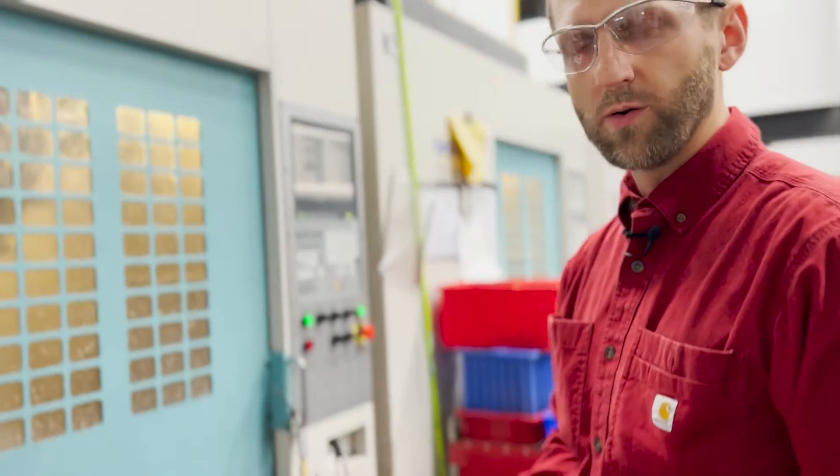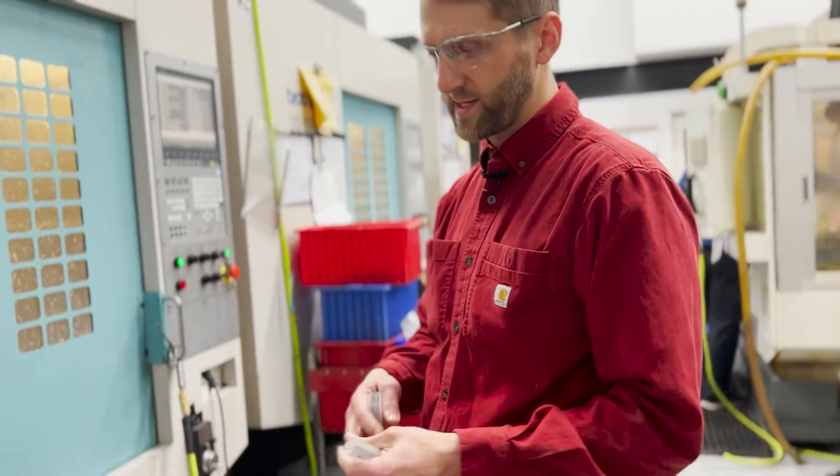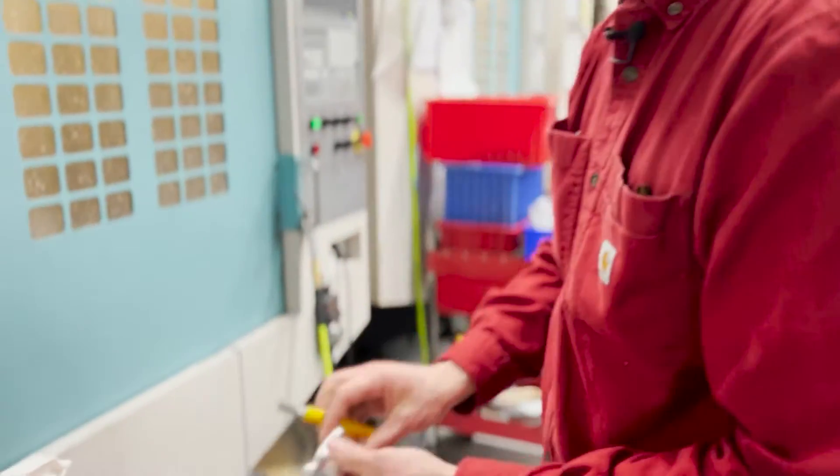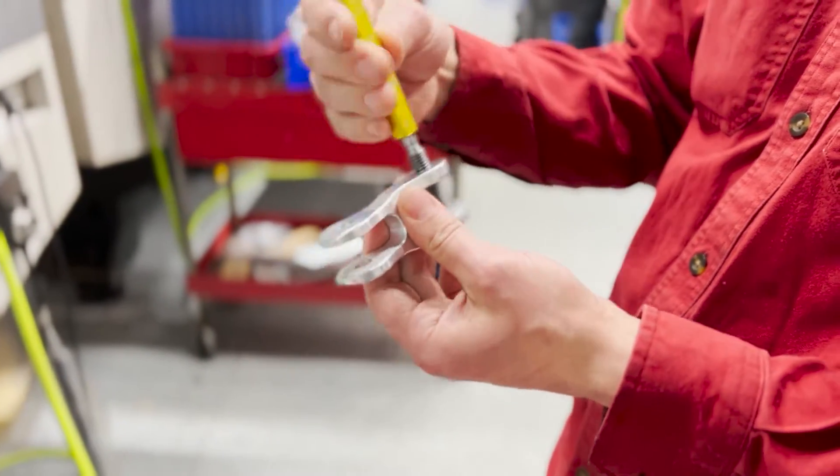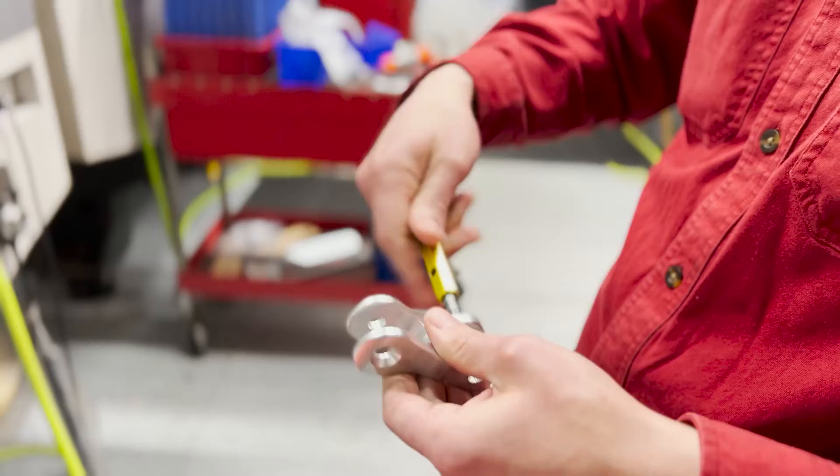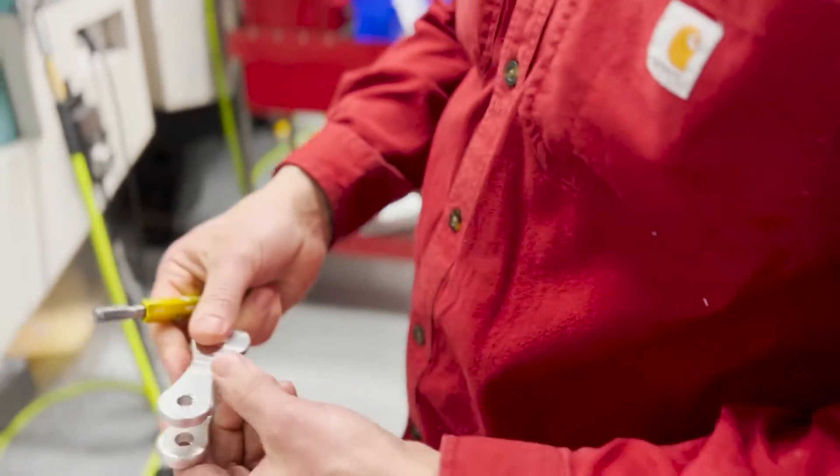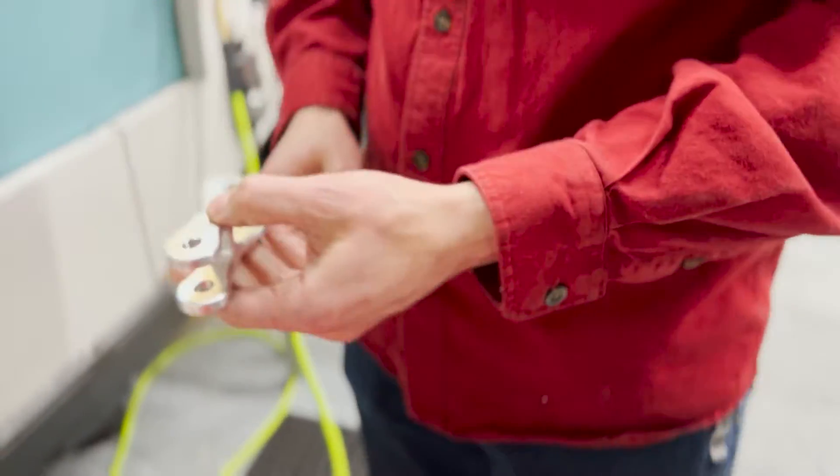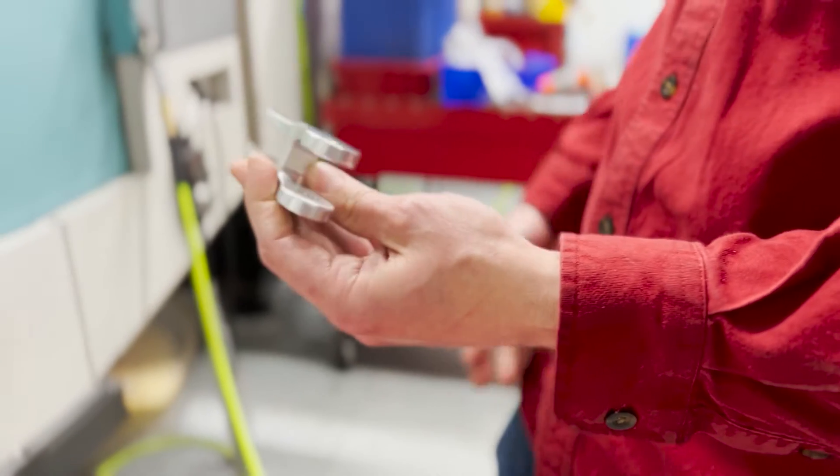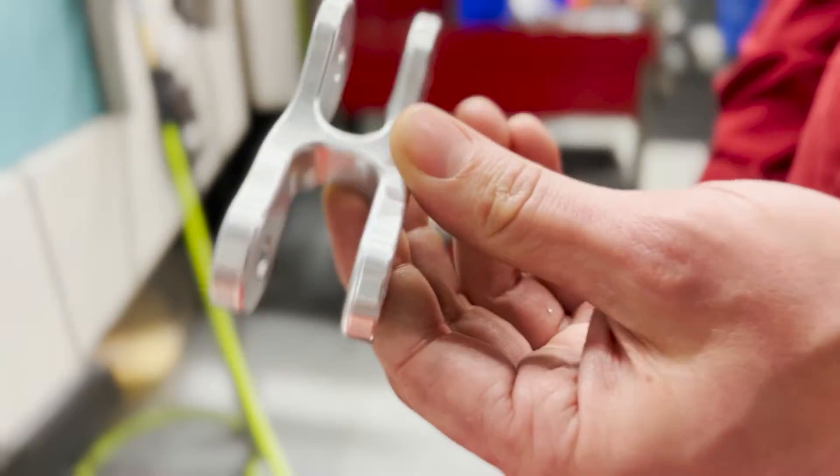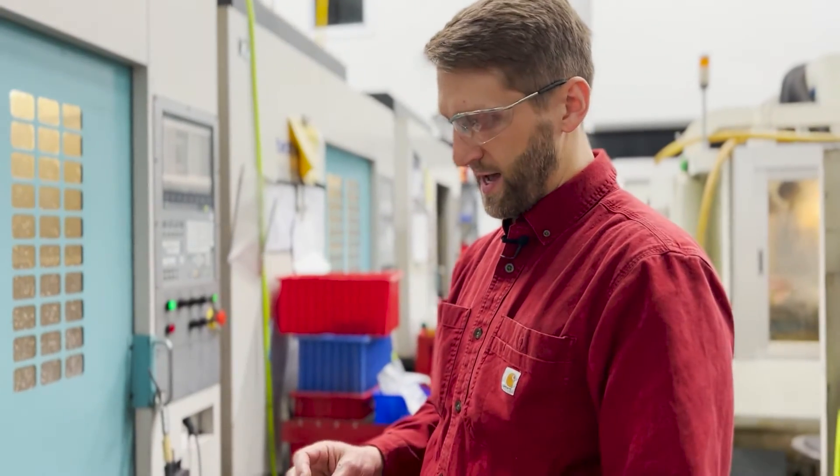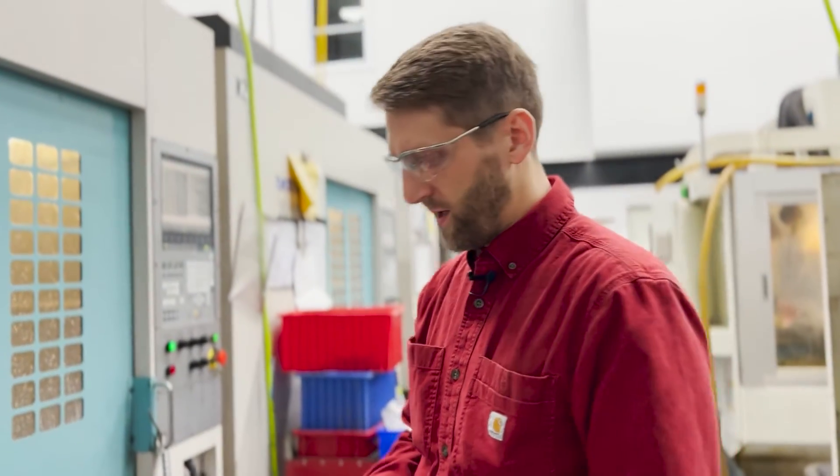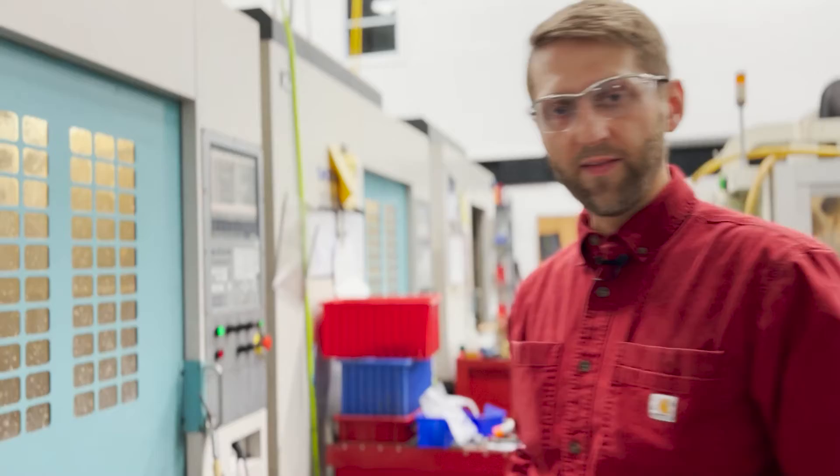When that all comes out, we have a number of different gauges. We'll check the holes, make sure they're all coming out the right size. We have a thread gauge to make sure our threads are to spec. Once that's all complete, these parts will all go down to our tumble finishing room where we'll give them a last finish tumbling in rock media, and after that they go on to anodizing.